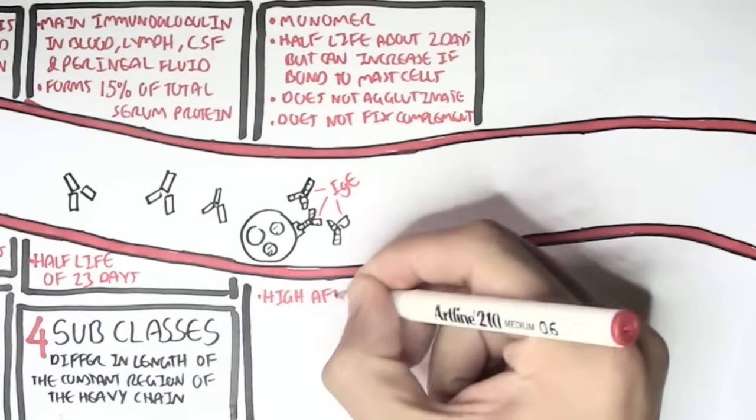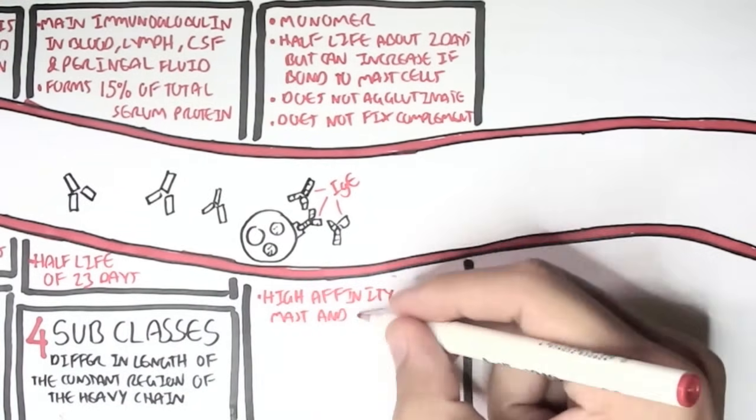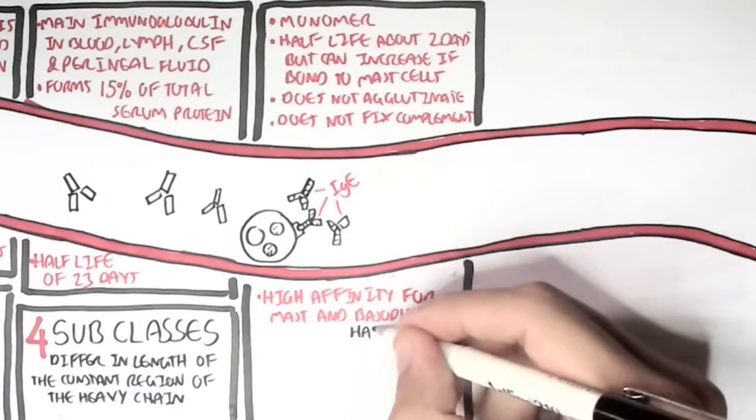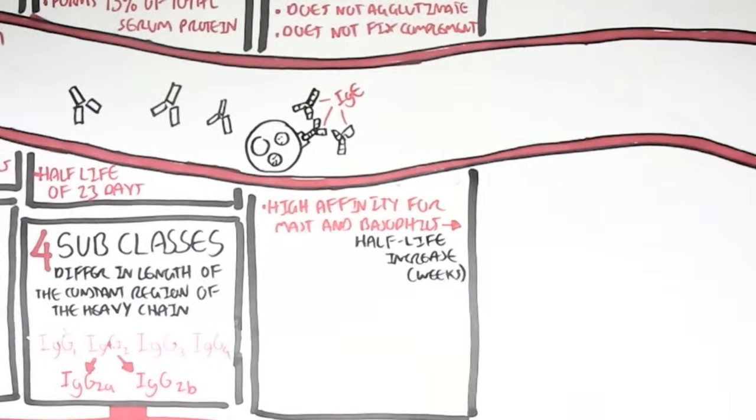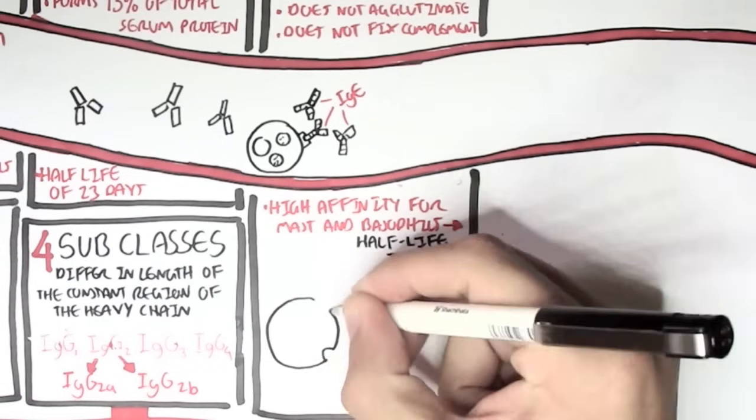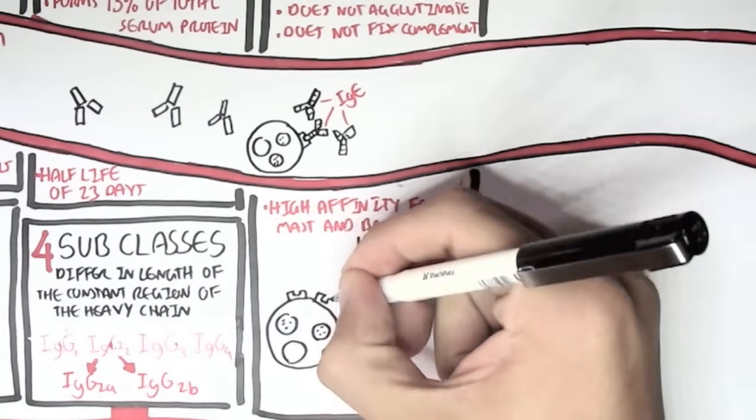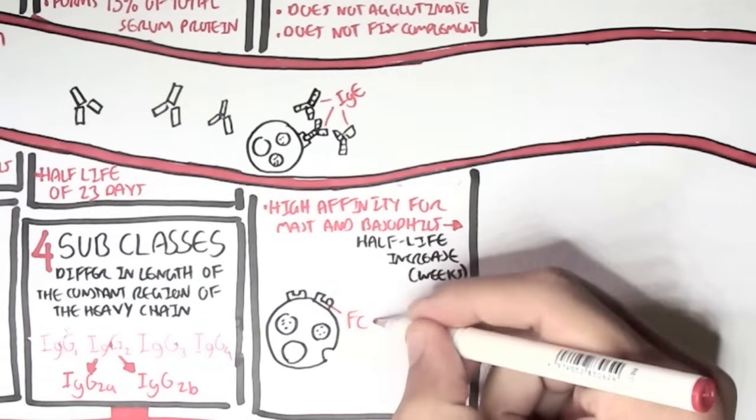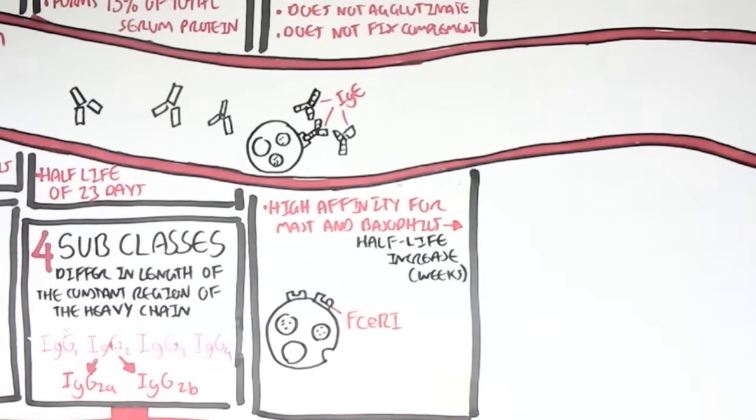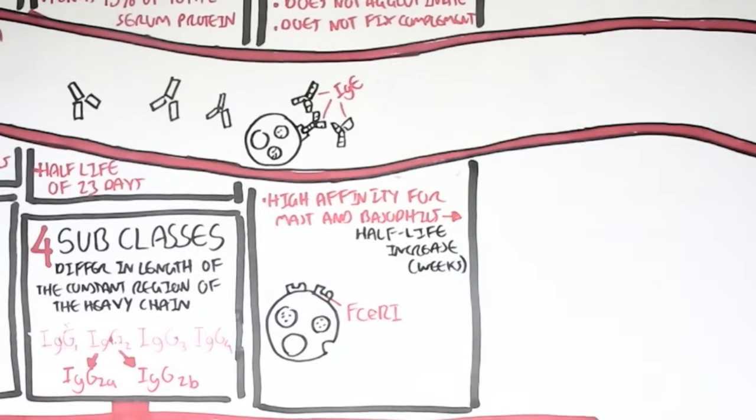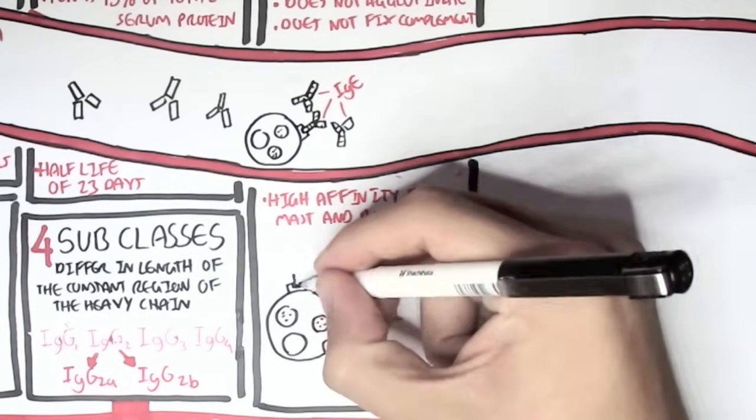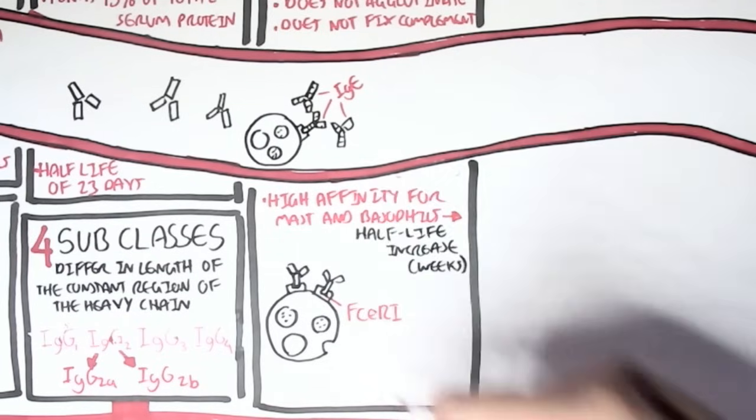So as I mentioned, IgE has high affinity for mast cells and basophils, which allows its half-life to be increased to about 2 weeks. So here we have a mast cell and the mast cell has special receptors called FC epsilon receptors, which are for IgE antibodies.